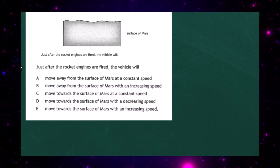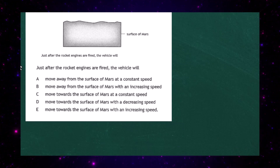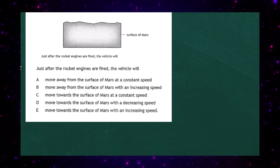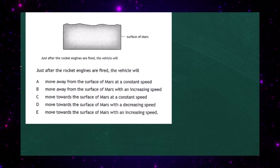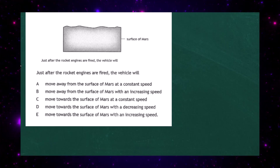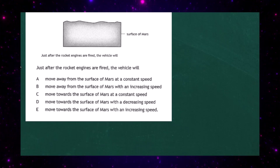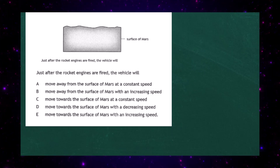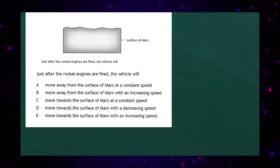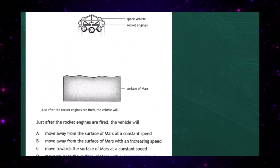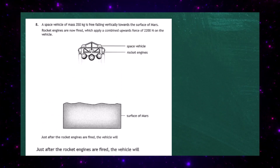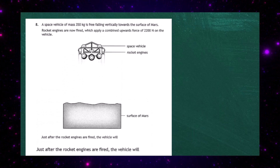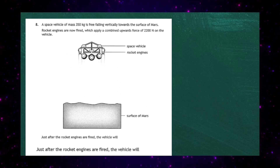The possible responses are: A — move away from the surface of Mars at constant speed; B — move away from the surface of Mars with increasing speed; C — move towards the surface of Mars with constant speed; D — move towards the surface of Mars with decreasing speed; E — move towards the surface of Mars with increasing speed.